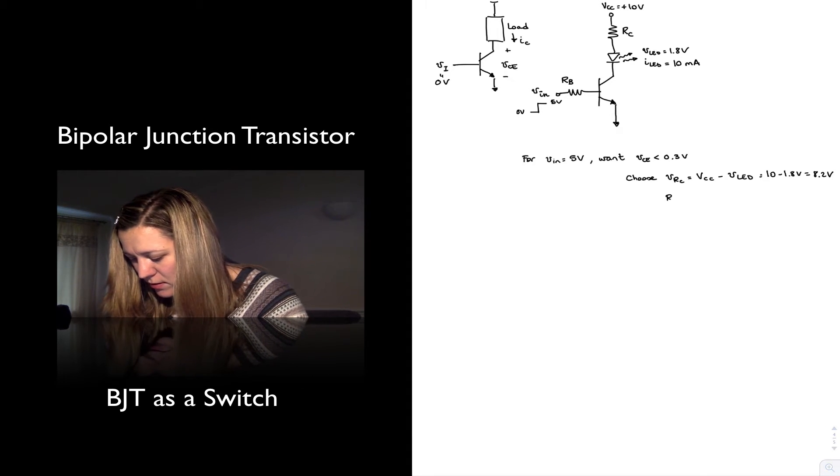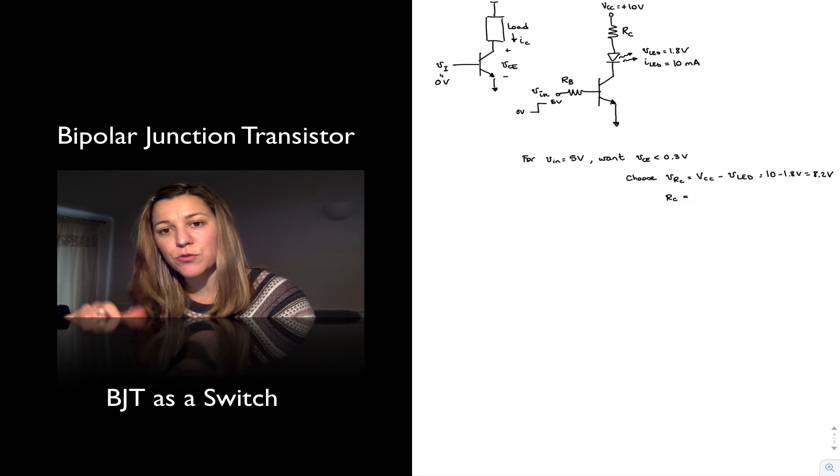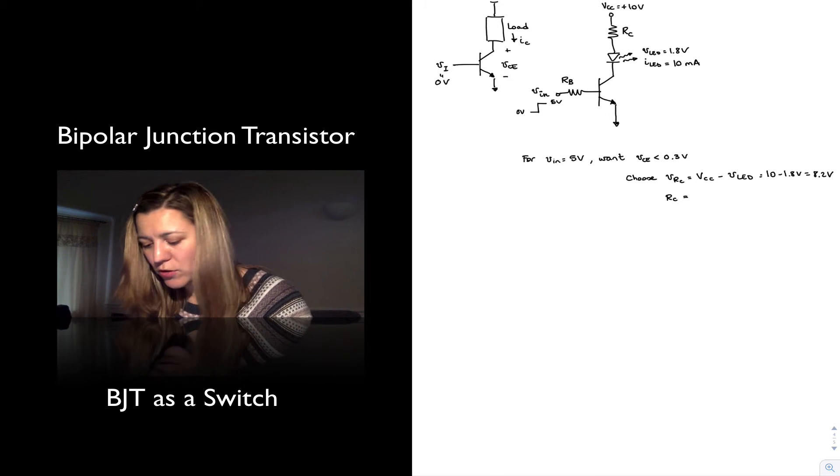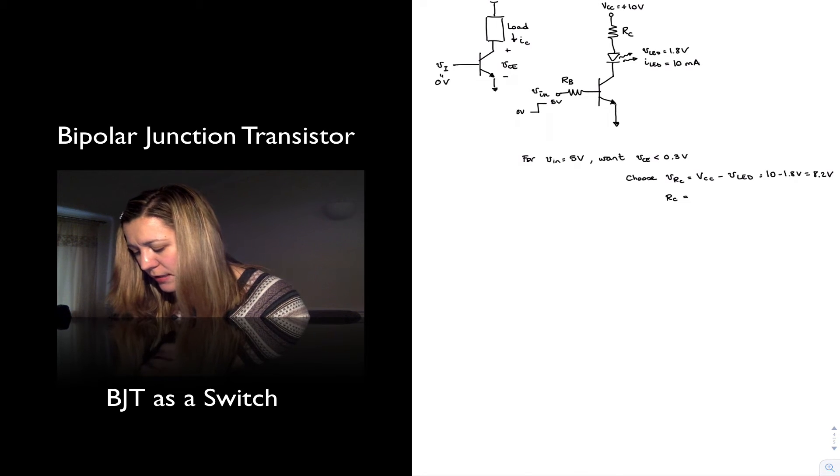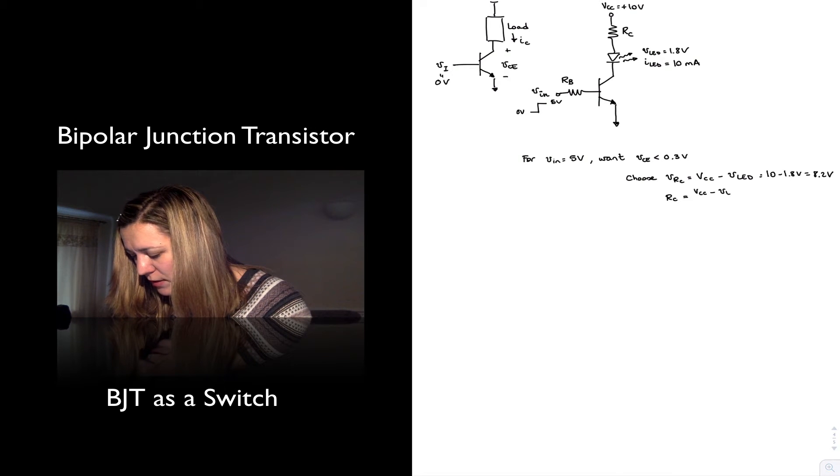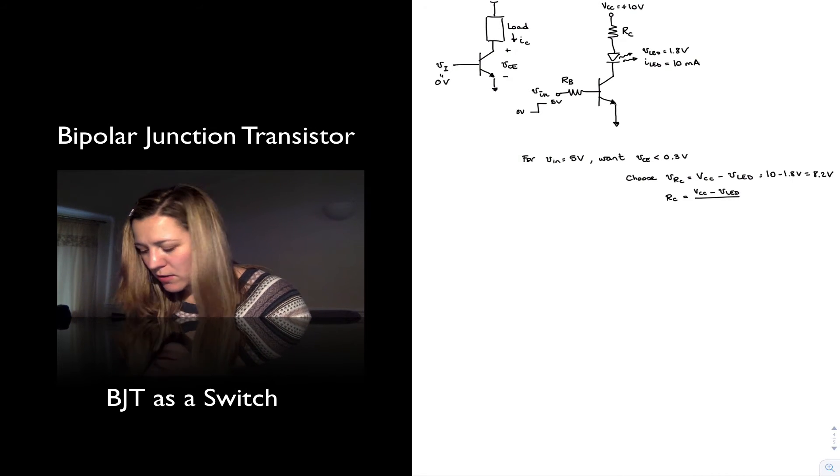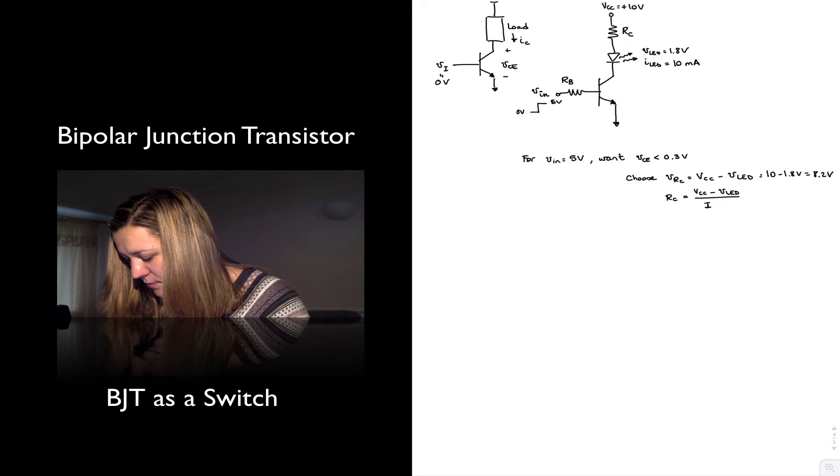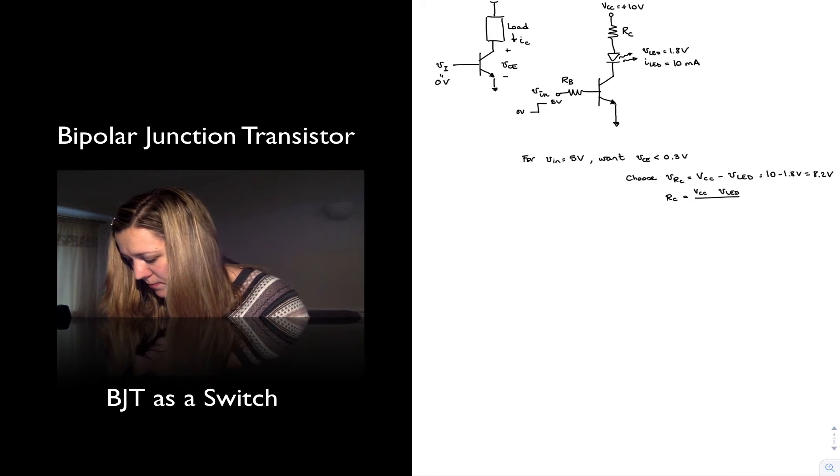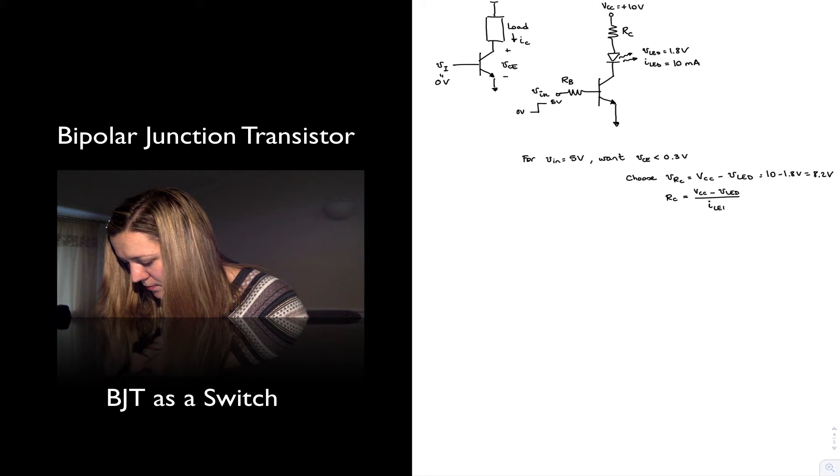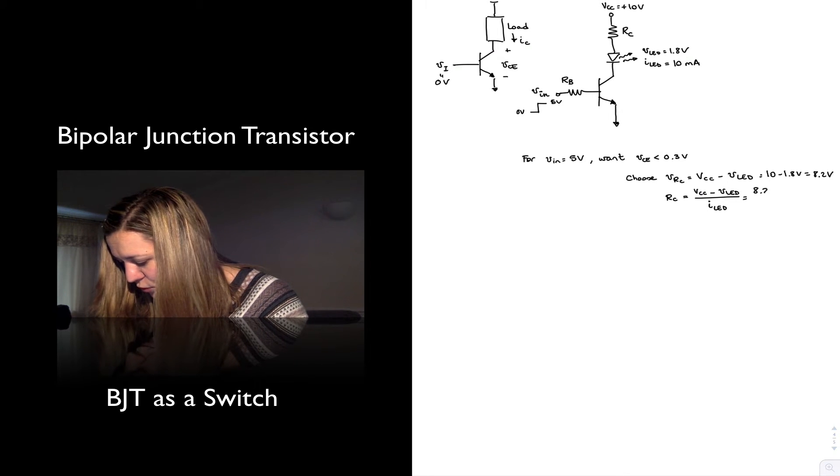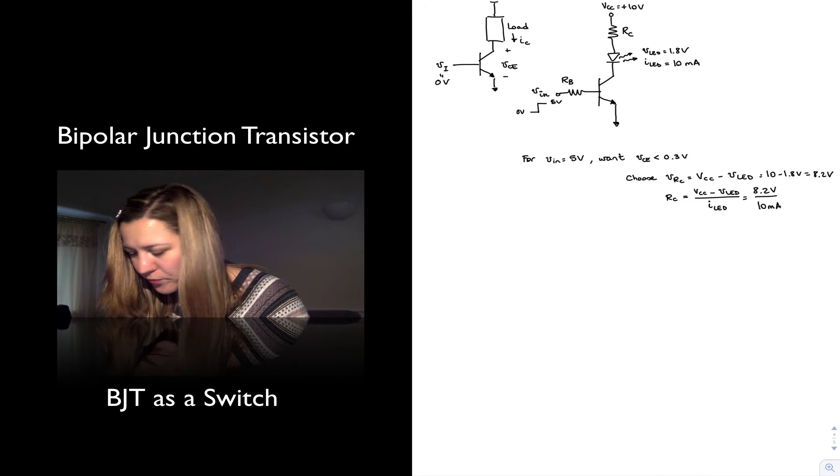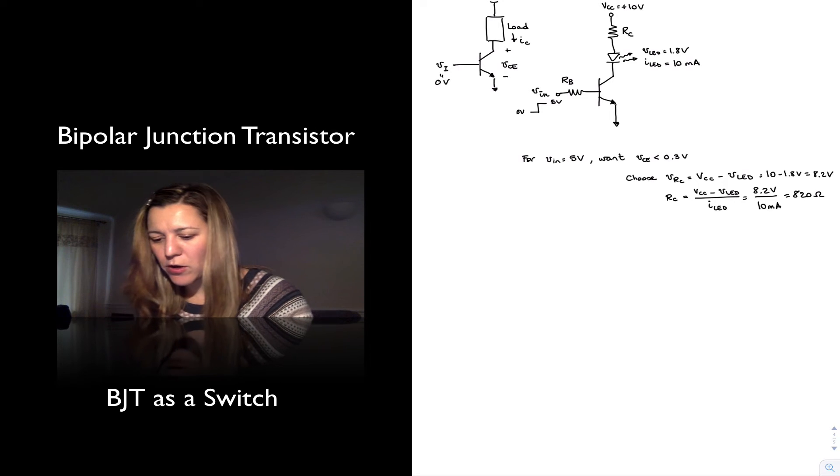So choose VRC equal to VCC minus VLED, or 10 minus 1.8 volts or 8.2. All right, so my RC that I want to calculate in that case is going to be equal to the voltage across the resistor divided by the current, which is 10 milliamps if I want to have the LED on. And so RC is going to be equal to VCC minus VLED, 8.2 volts, divided by my ILED. And so 8.2 volts divided by 10 milliamps is 820 ohms.